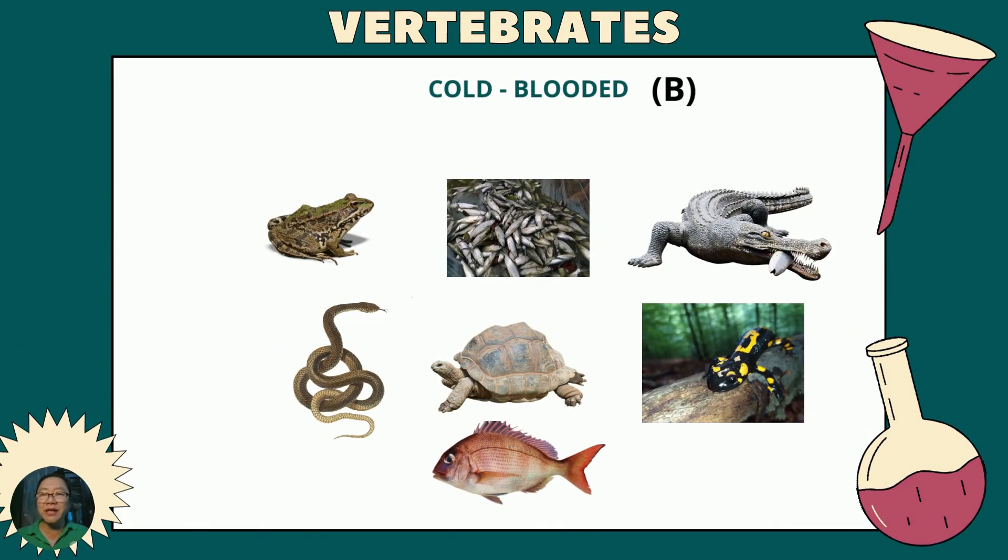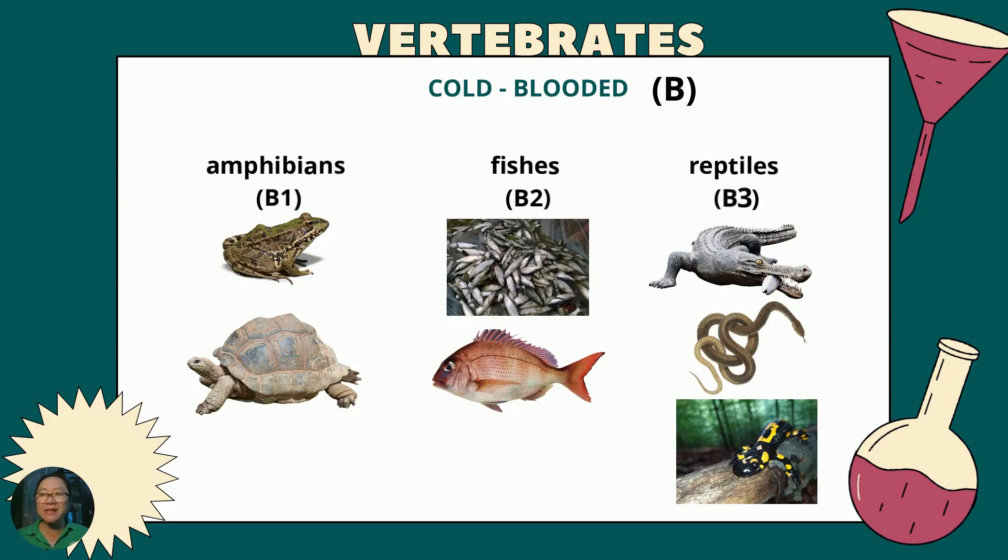Let's sort set B this time. How can we sort these cold-blooded animals? We can sort them as amphibians, fish, and reptiles. Turtle and frog are amphibians. We label this set as B1. Milkfish and tilapia are fishes. We label this set as B2. Crocodile, snake, and salamander are reptiles. We label this set as B3. This means that B1, B2, and B3 are subsets of set B.